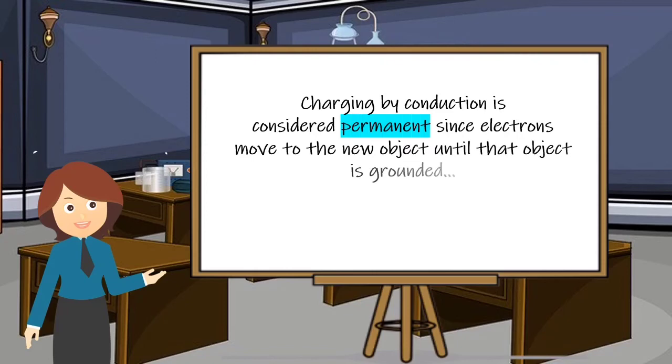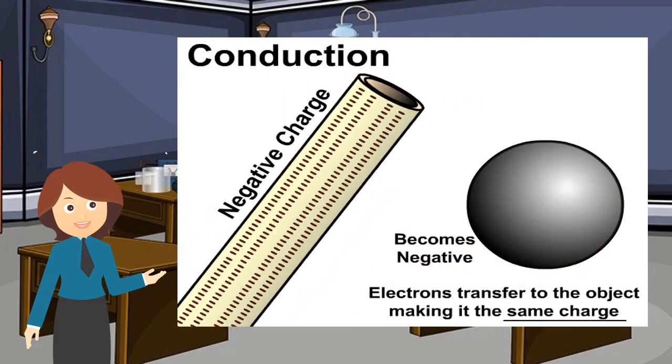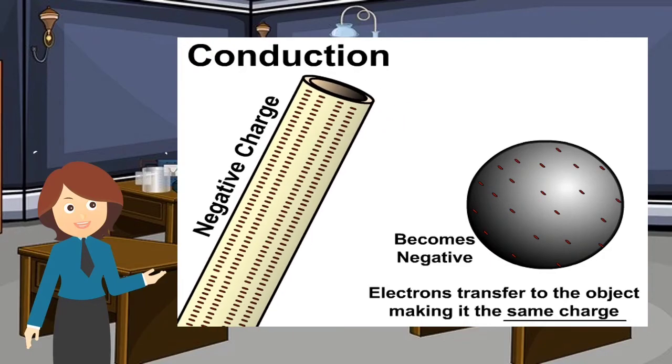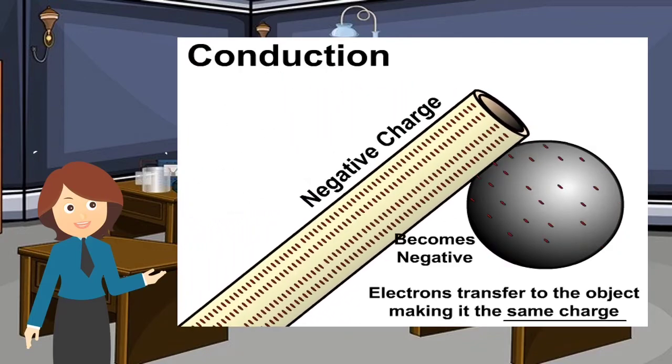Charging by conduction is considered permanent since electrons move to the new object until that object is grounded. So as you can see in the picture, when a negatively charged rod is brought in contact with the neutral sphere, it transfers some of its electrons to the neutral sphere, making it negative.